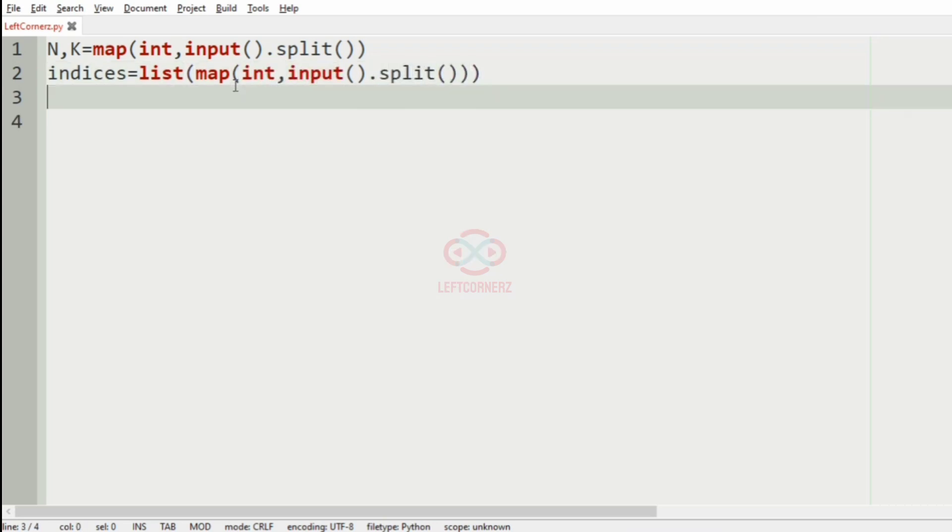And then we'll have the binary string as zeros into k. That is initially if we have k value as something like two, then we'll have two zeros as our initial value.